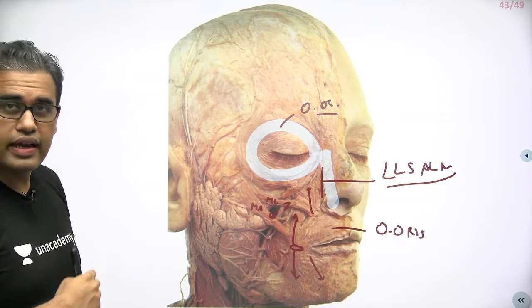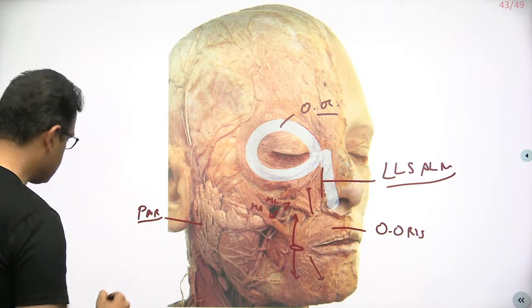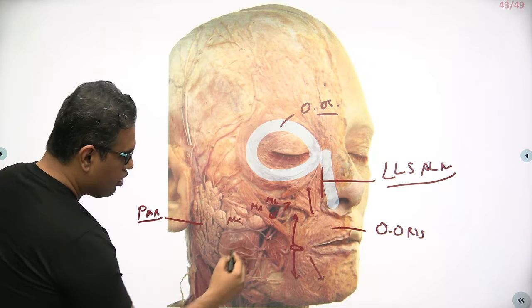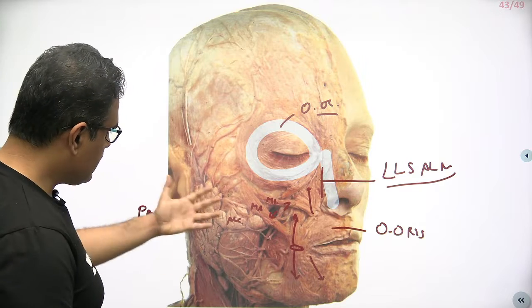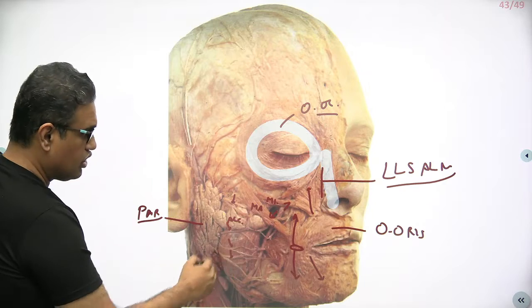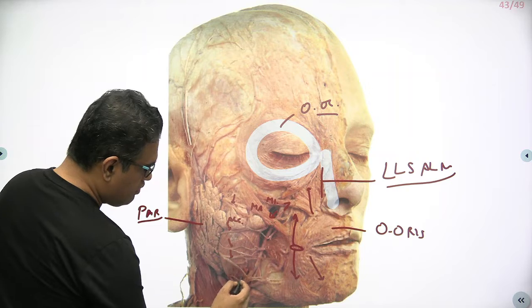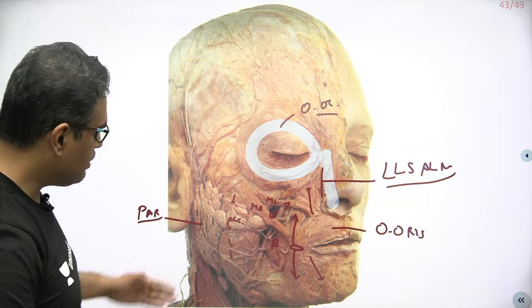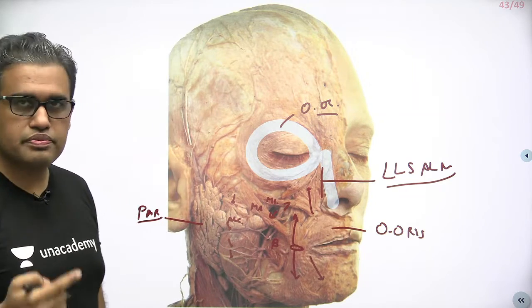Coming to the lateral side, this is the parotid salivary gland. You can see the accessory parotid gland running over here, on to which you have the parotid duct — not clearly shown here. Through the parotid gland you can see some nerves — these are the facial nerve branches which are going to supply all these facial muscles. One more facial muscle we can appreciate is the buccinator. The parotid duct will pierce it and open up into the vestibule opposite the upper second maxillary tooth.